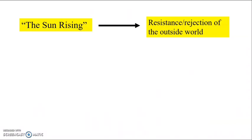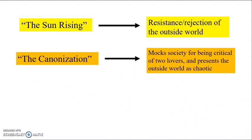If you're looking for poems to compare to 'The Good Morrow' in an essay, I'd recommend 'The Sun Rising' — a poem in which Donne and his lover berate the sun for rising and disrupting their little world, forcing them out into the outside world, so it too reflects on the theme of the microcosm. Similarly, 'The Canonisation' mocks society for being critical of two lovers and presents the outside world as similarly chaotic, though it should be noted that it concludes with Donne claiming the lovers' love serves as a model for the rest of the world — unlike 'The Good Morrow,' there is a kind of reconnection with the outside world at the end.